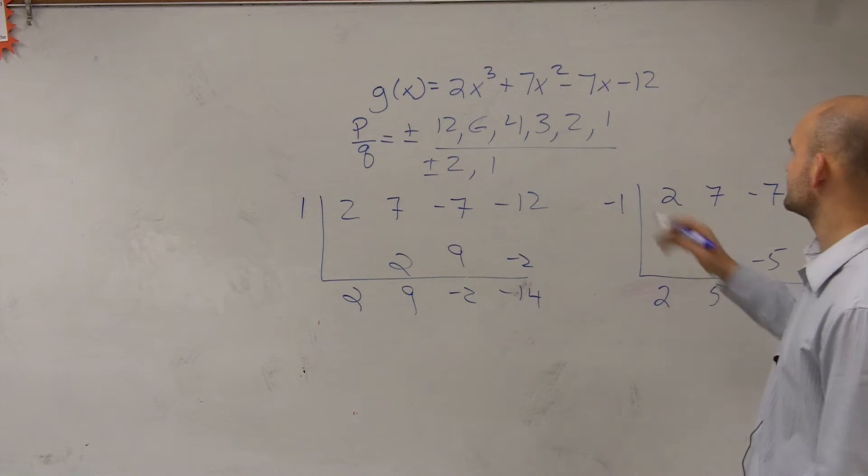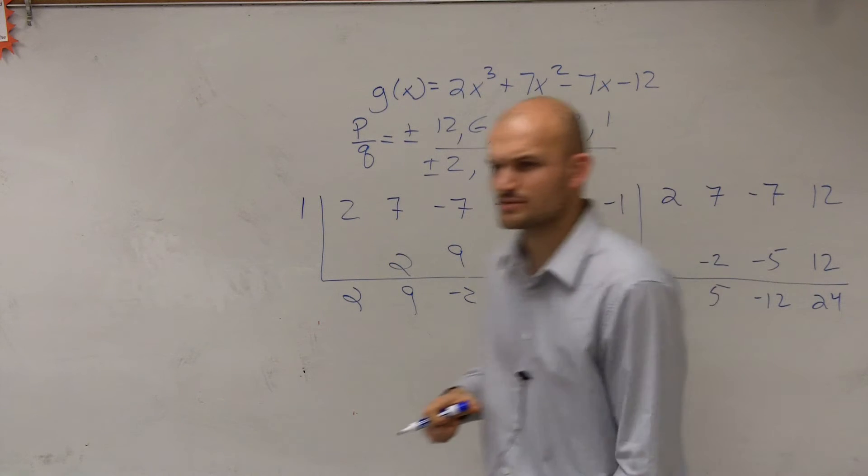Negative 12 times negative 1 is going to be a positive 12. Did I do all that correctly, 5? Yeah. So 1 does not work, right? Although it looks like 1 on the graph was a 1, wasn't it? Did 1 look like 1?